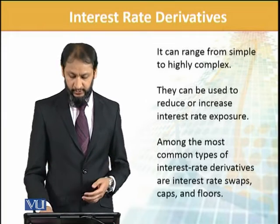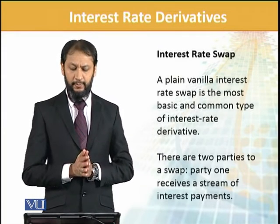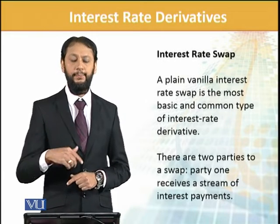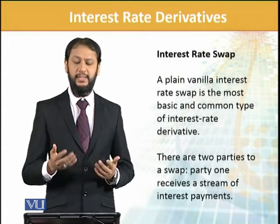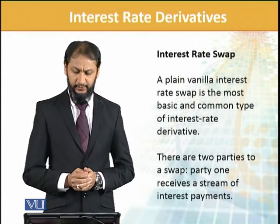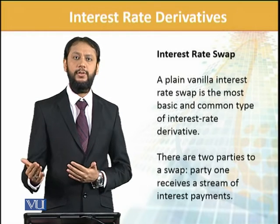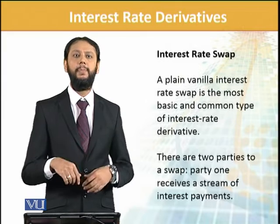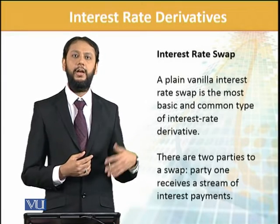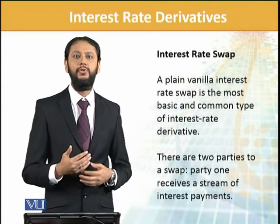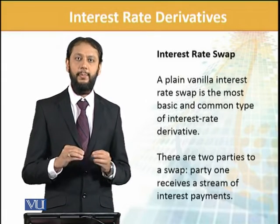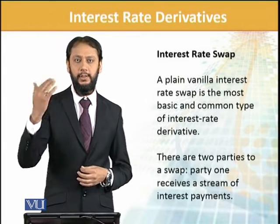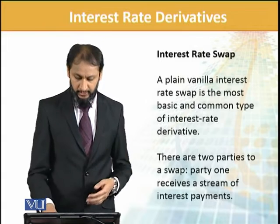In a swap regarding interest rates — and we have a specific module on this as well, I will refer you to look at that — the plain vanilla interest rate swap is the basic and most common type of interest rate derivative. What happens in it is that one party is making a fixed rate stream of payments and one party is making a floating rate stream of payments. So if you have, let's say, a floating rate loan and you are afraid that rates will rise, then you come in as the fixed-rate receiver, and you restructure your position — rather than paying floating, you go on to pay fixed.